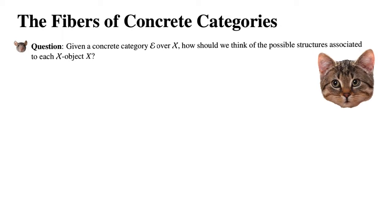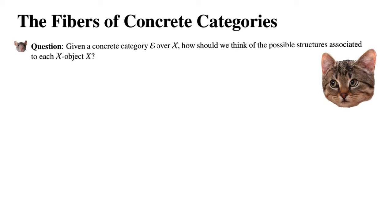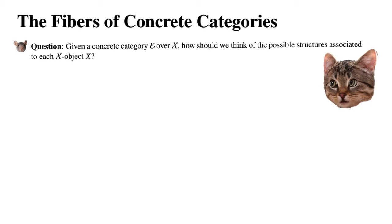Let's talk about the fibers of concrete categories. The question is: given a concrete category E over X, how should we think about the possible structures that we can associate to each object X?